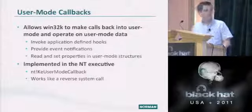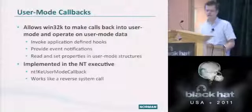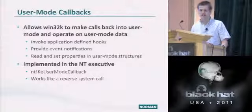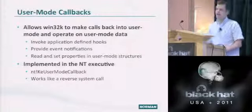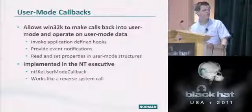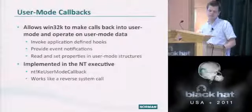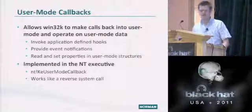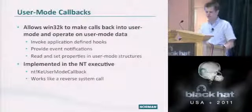User mode callbacks allow Win32K to make calls back into user mode to operate on user mode data — for instance, to invoke application-defined hooks, provide event notifications, or read and set properties in user mode structures. The mechanism itself is implemented in the NT executive. Win32K calls an export, and it's essentially a reverse system call — the opposite of what you'd expect for a normal system call.